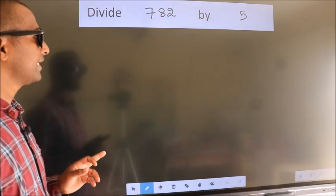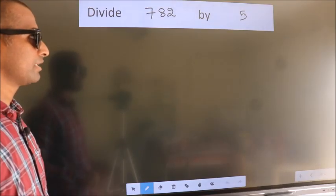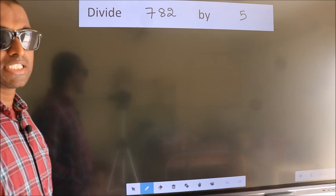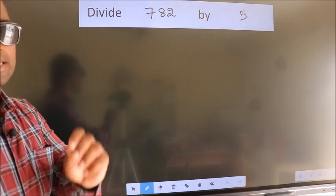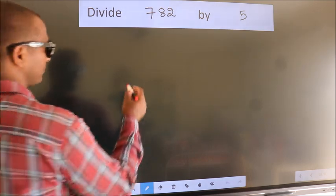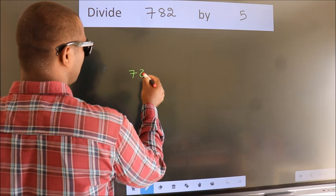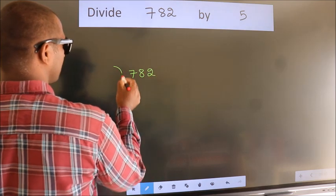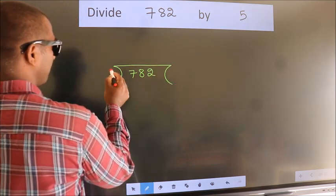Divide 782 by 5. To do this division, we should frame it in this way: 782 here, 5 here.